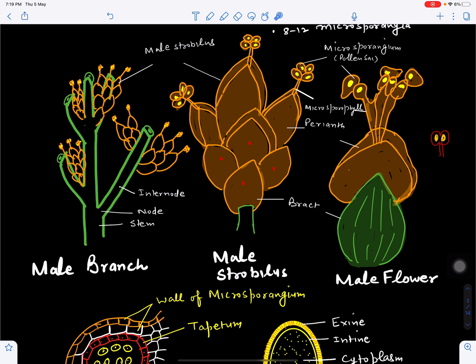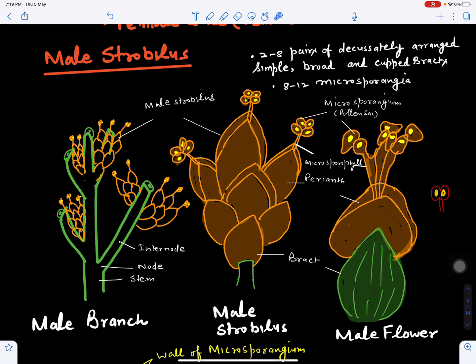The lower bracts in the male cones are sterile. They are made up of two to eight pairs of decussately arranged simple, broad, and cupped bracts. Decussately means at right angles to each other.